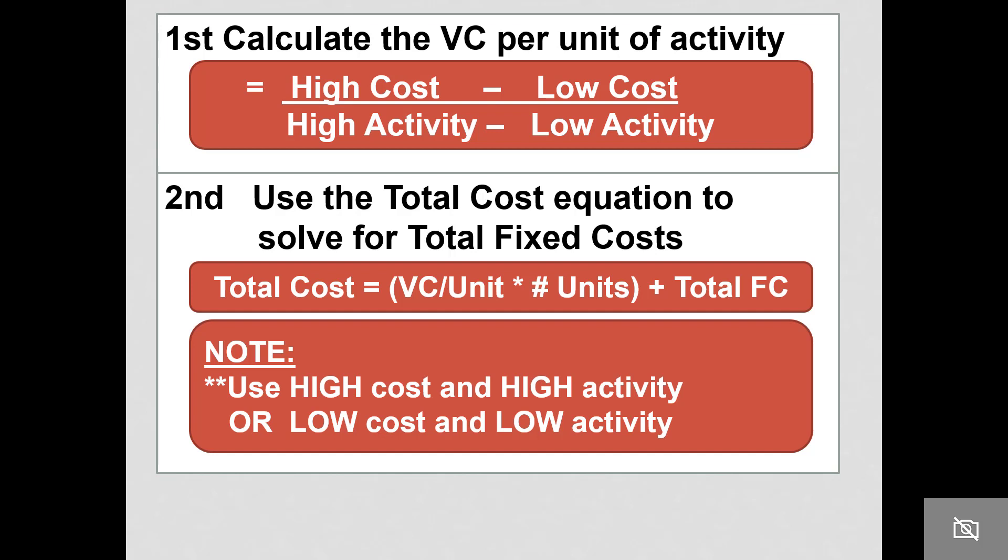The idea is you don't want to use the intermediate observations. You want to use the highs or the lows.